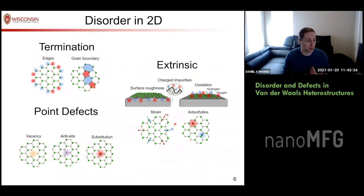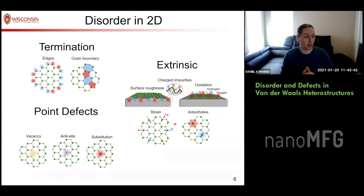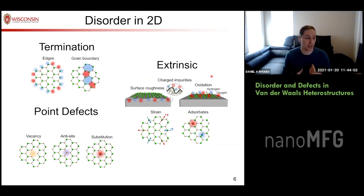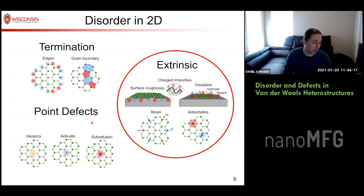What are the things that contribute to these problems? In 2D, disorder is either termination at the edges of the grain boundaries — which in most cases we have good control over, with CVD yielding tens-of-micron sized single crystals — extrinsic disorder like handling adsorbates causing nanobubbles, excessive strain from stacking, air sensitivity, and finally point defects, which are the main problem and the ultimate focus of my talk.